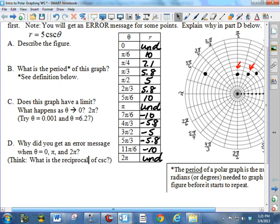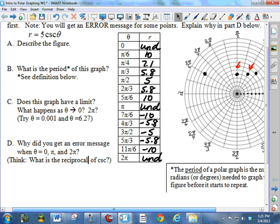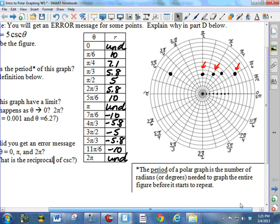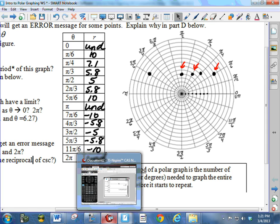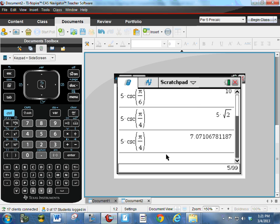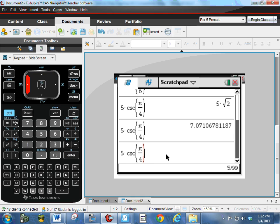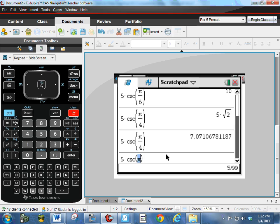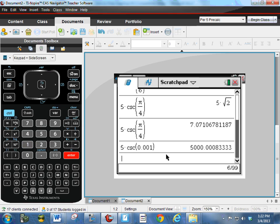Does this graph have a limit? What happens as theta gets close to 0? It's undefined at 0. It's undefined at 2 pi. What happens if we get really close to those numbers? So let's put those into the calculator. Pick a number close to 0. And I'll go up here, grab the 5 cosecant. Let's put in a number close to 0, 0.001 or something like that. A very large positive number. So this is saying when the angle is really, really, really small, the radius is really, really, really big.